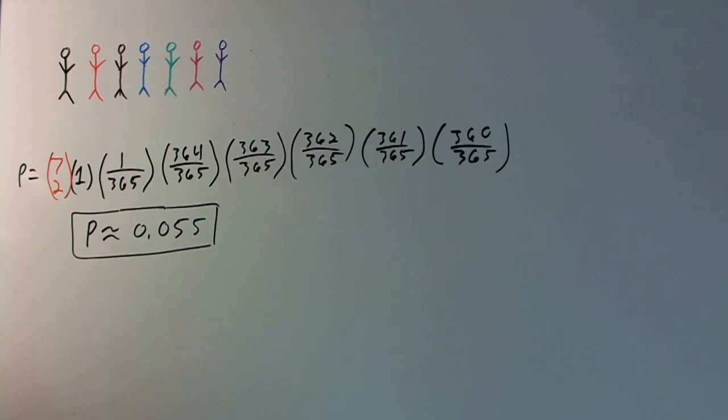Now, that is a substantial increase from the other problem where it was 1.6 times 10 to the negative 4. So, obviously, once you remove the date restriction, it's a lot more probable, right? So, hopefully, this helped. Hopefully, this cleared up some things, and we will see you all in the next video.